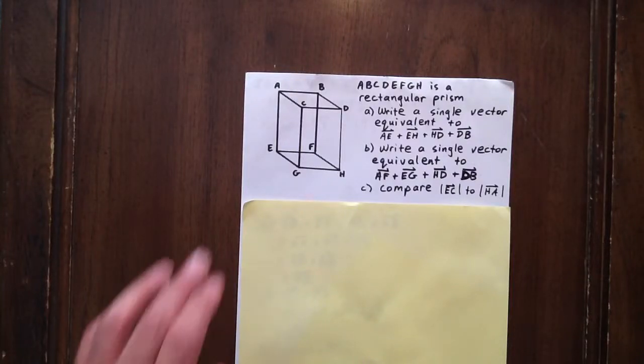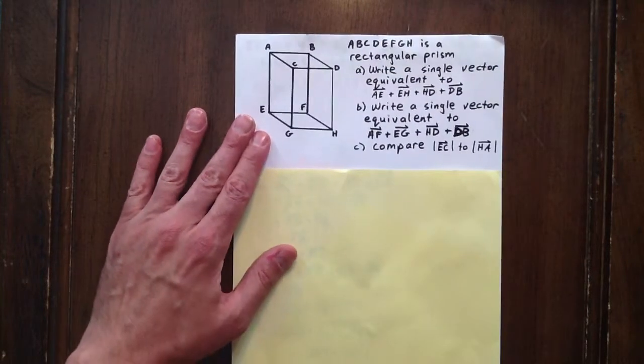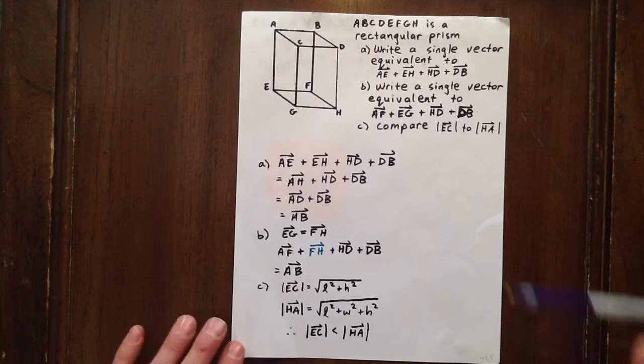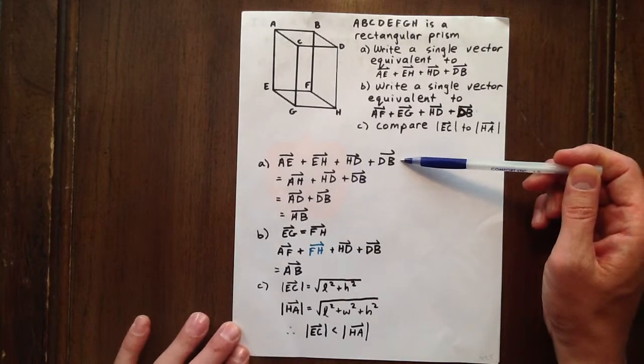In this particular question we have a rectangular base prism and we want to make certain evaluations about the vectors that can be created within them.